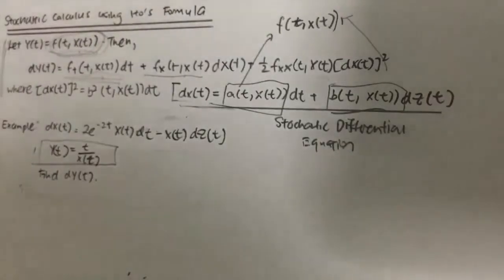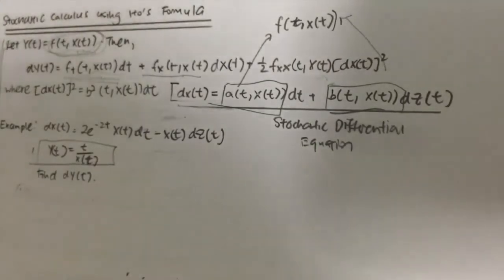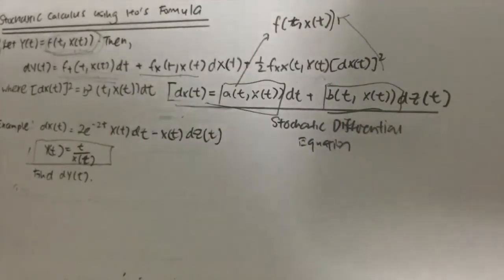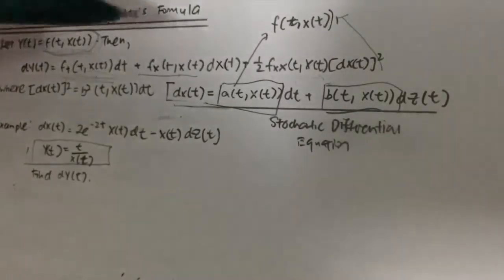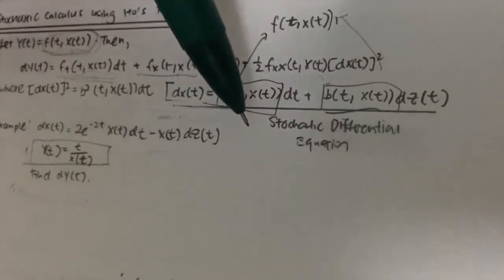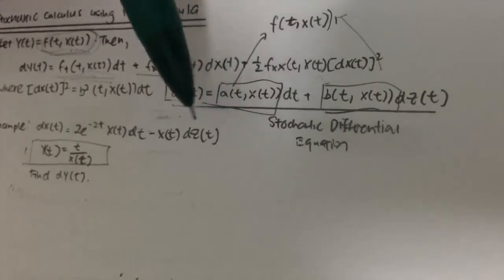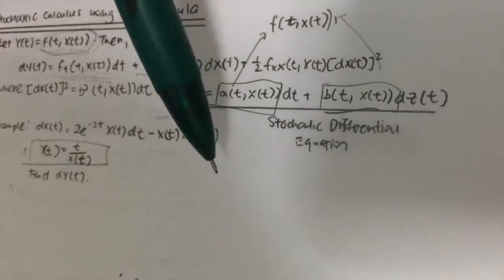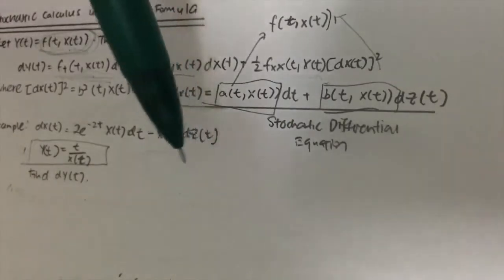Hi, this is the MgK and today this is part two of the stochastic calculus using Ito's formula. Before you continue with this video, please refer to part one of the stochastic calculus, whereby I explain how to derive dxt — the stochastic differential equation — given xt in terms of t and zt, where zt is a standard Brownian motion.